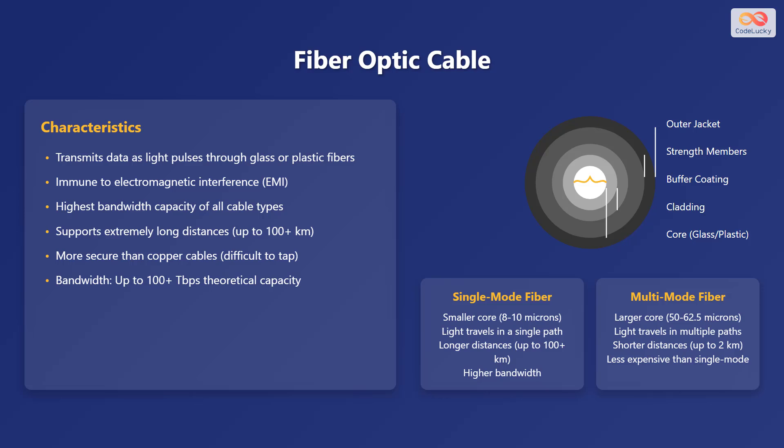There are two main types of fiber optic cables: single-mode fiber, which has a smaller core and allows light to travel in a single path for longer distances, and multi-mode fiber, which has a larger core and allows light to travel in multiple paths for shorter distances.